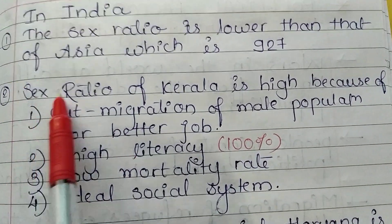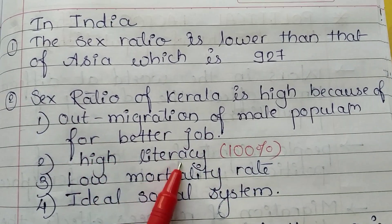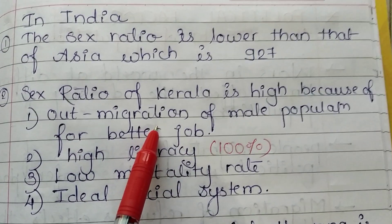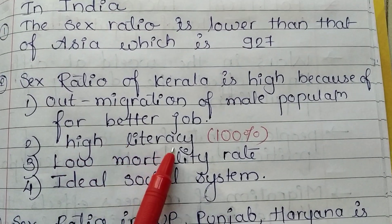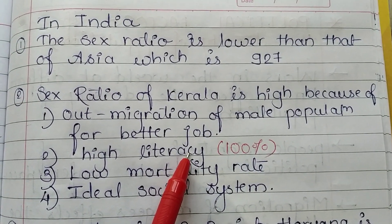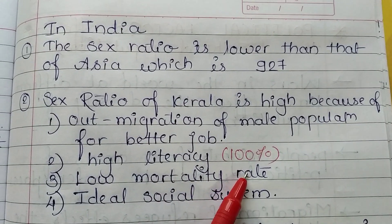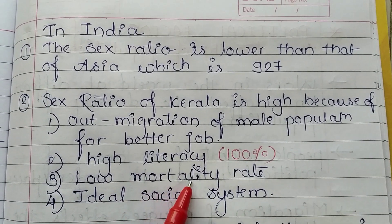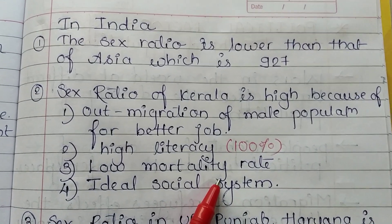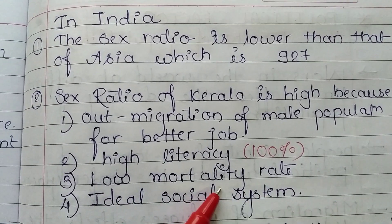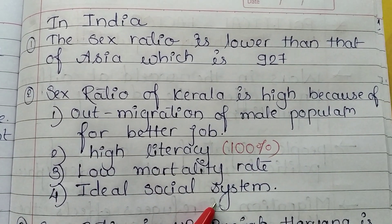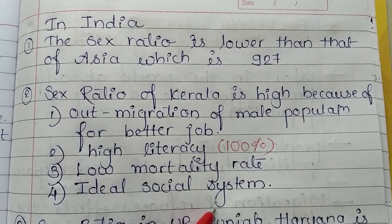The sex ratio of Kerala is high for several reasons. First, out-migration of male population for better jobs — many educated people migrate outside for better employment opportunities. Second, high literacy rate: there is no difference between girls and boys; all are treated equally, with nearly 100% literacy. Third, low mortality rate — the infant mortality rate in Kerala is very low. Fourth, an ideal social system: the social system in Kerala has no discrimination between girls and boys; equal rights are given to all.